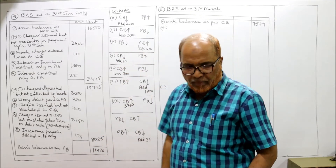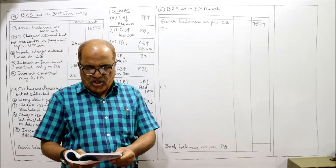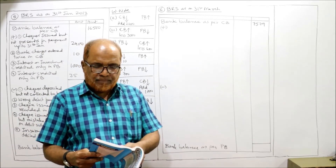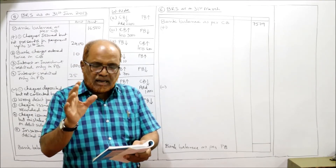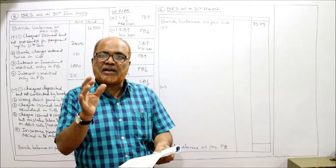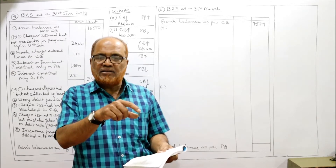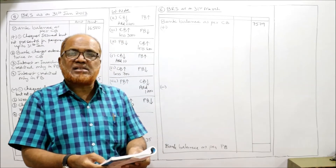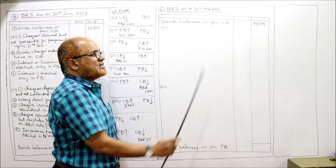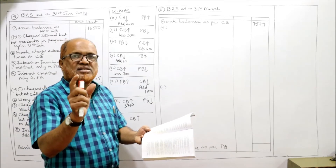Now I'm starting Problem Number Six. On 31st March, a merchant compared his pass book with his cash book and found the following differences. The merchant's cash book disclosed a debit balance of rupees 7579 on 31st March. A debit balance means it is a favorable balance. So our starting point is: bank balance as per cash book — rupees 7579. We prepare the BRS as on 31st March.